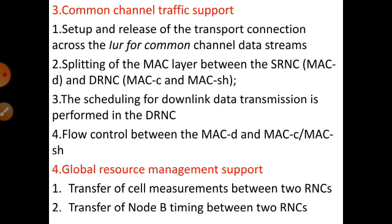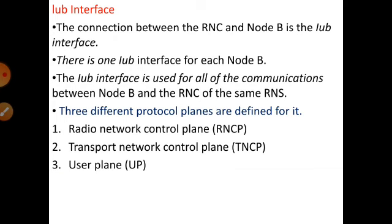Fourth function is global resource management support: transferring cell measurement conditions between two RNCs and transferring Node B timing activity between two RNCs. Because we are using one Node B station that belongs to two different RNCs, they transfer the Node B timing between the two different RNCs. Up to this we finish the IUR interface.